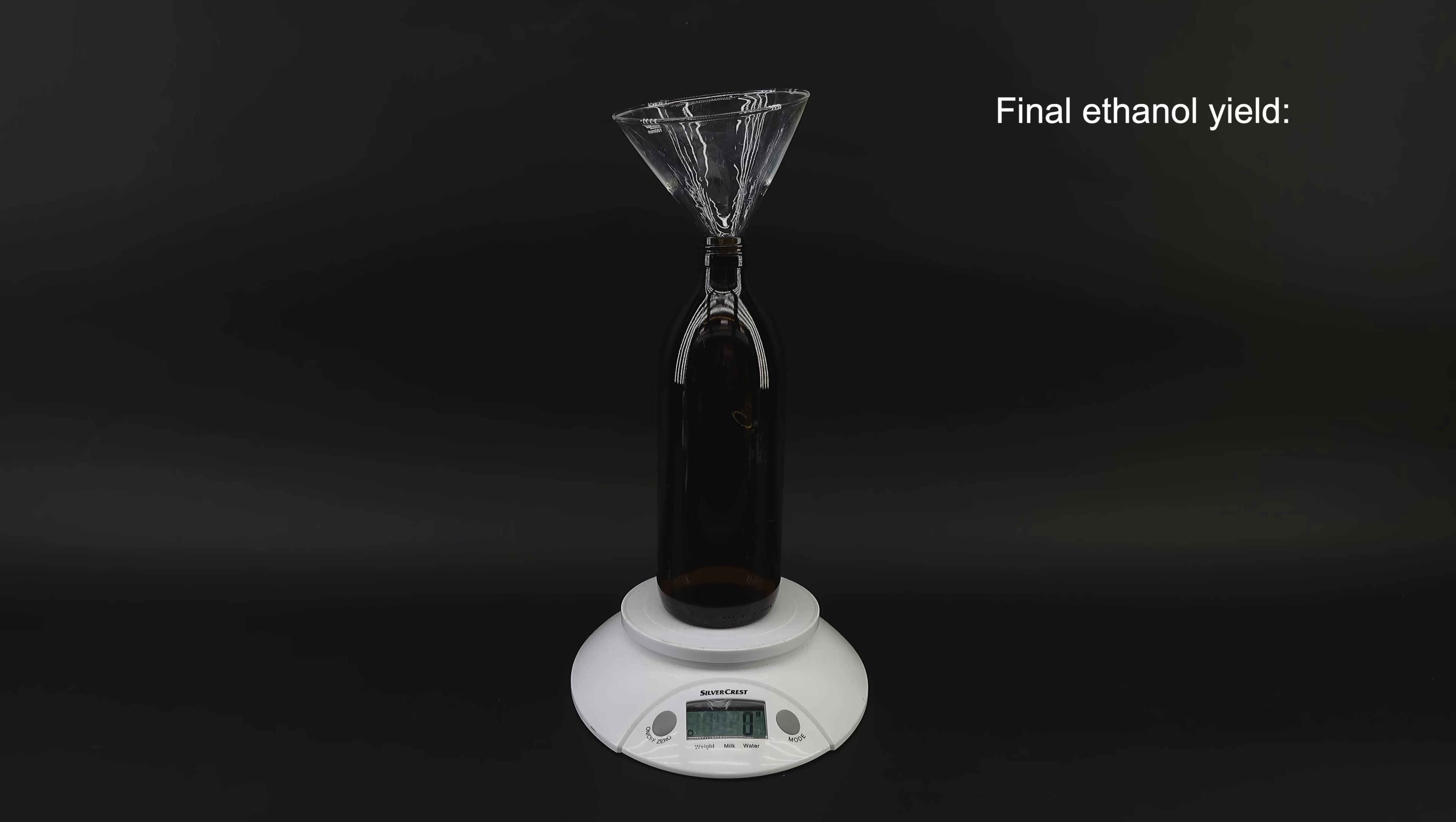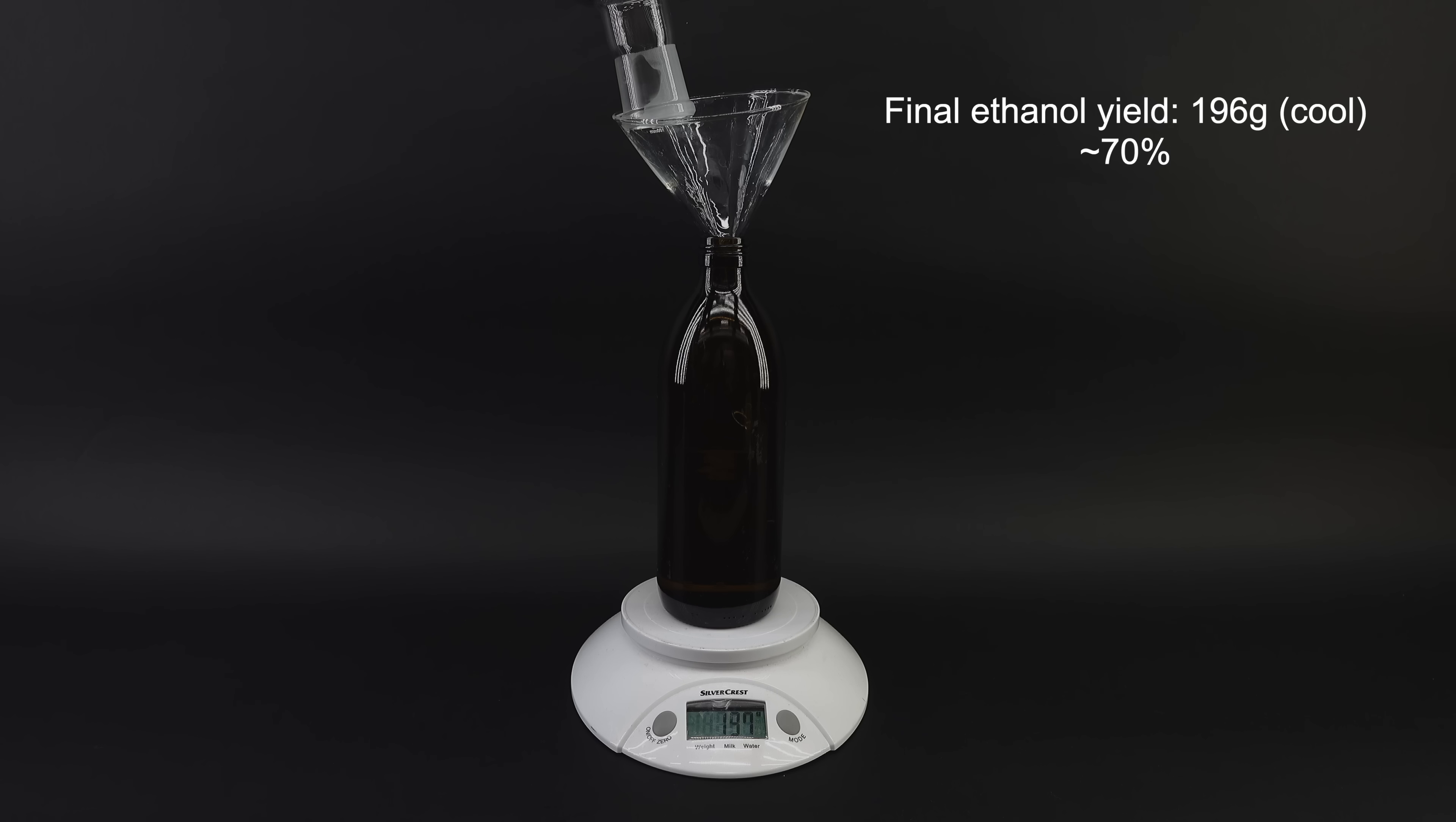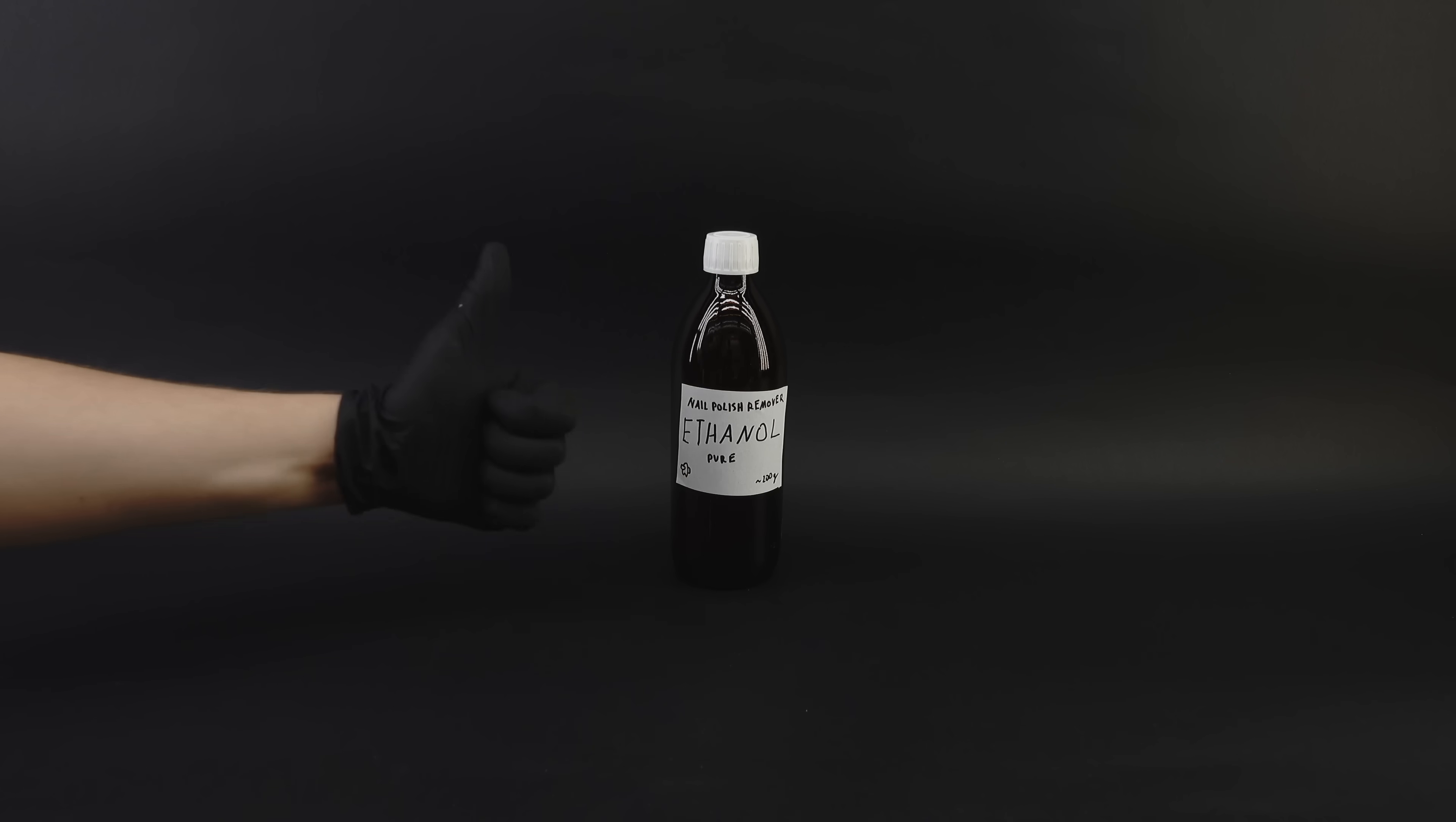Now, in terms of the yield from this whole grueling process, I managed to make 196 grams of pure ethanol, which corresponds to around 70% based on the roughly half a liter of ethyl acetate I used. This is kind of incredible, especially considering all the emotional roller coasters and distillations I went through, and it proves that combining nail polish remover and drain cleaner is a real way of making alcohol.